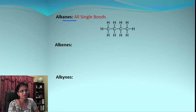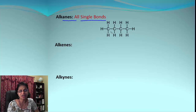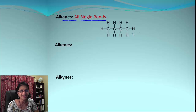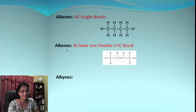Let's talk one by one about each group. The first group is alkanes — these have all bonds as single bonds. Look at the example: we have a chain of four carbon atoms connected to hydrogen atoms, and every bond is a single bond. So alkanes end with the suffix '-ane.'